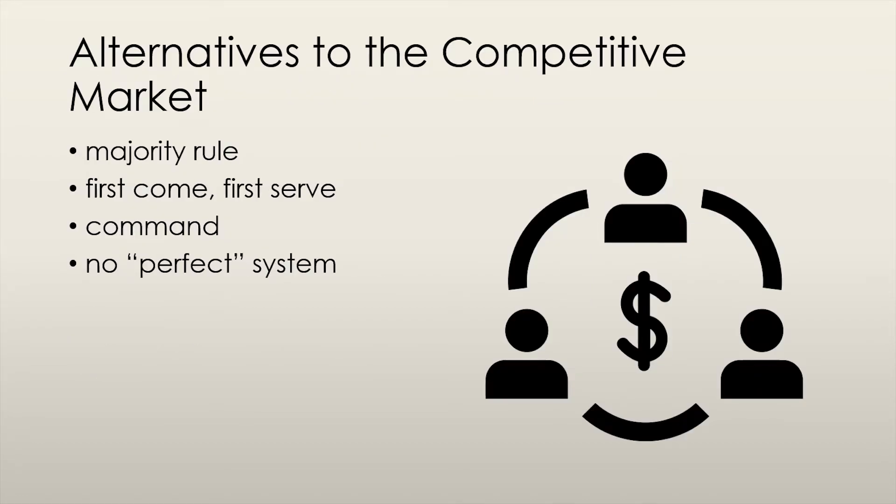If we don't use the competitive market as a means of allocating resources, we can consider using any of the allocation methods I talked about in the first part of this lecture. The idea is that there is no quote-unquote perfect allocation method, but the competitive market seems to work the best for goods and services.